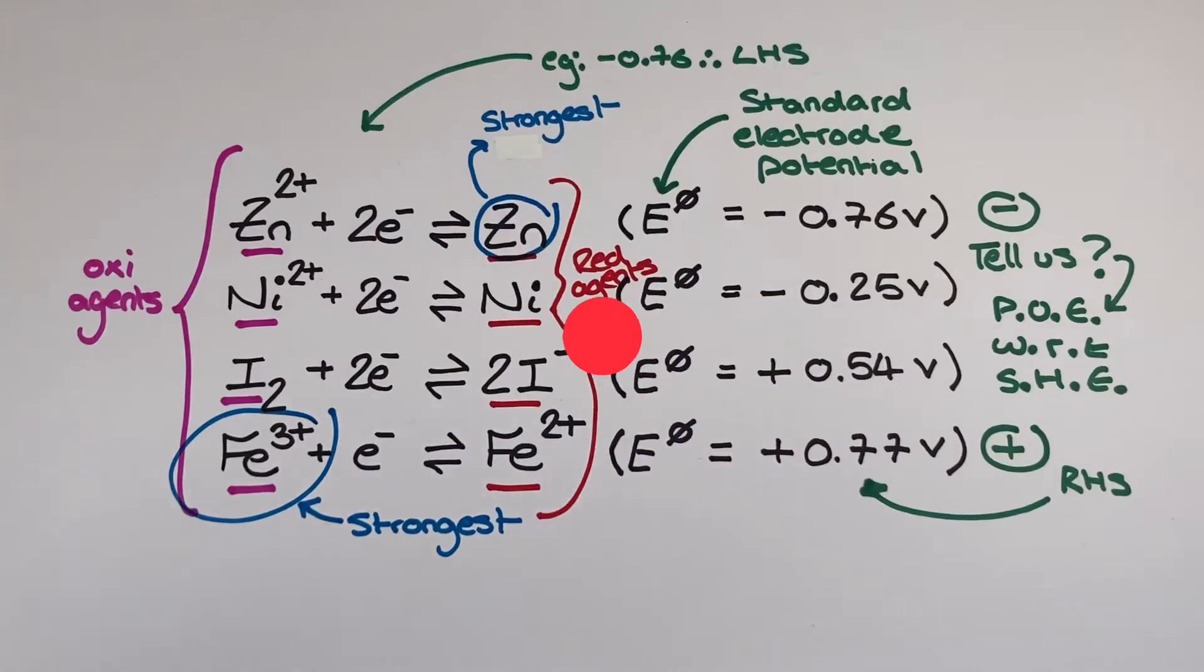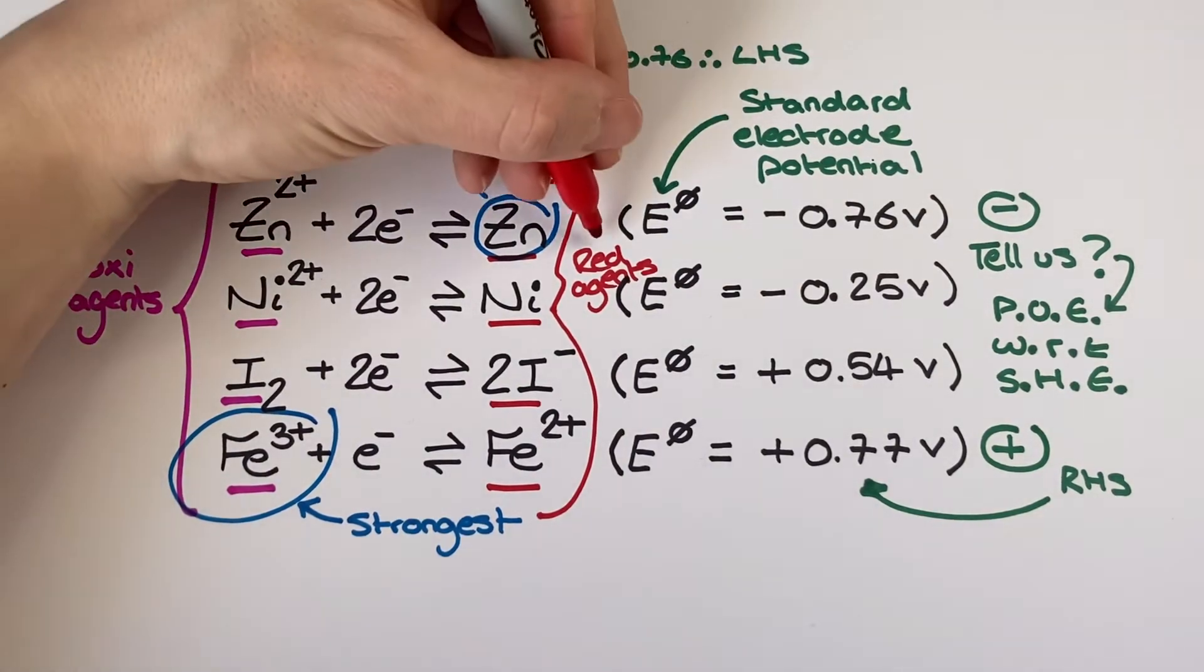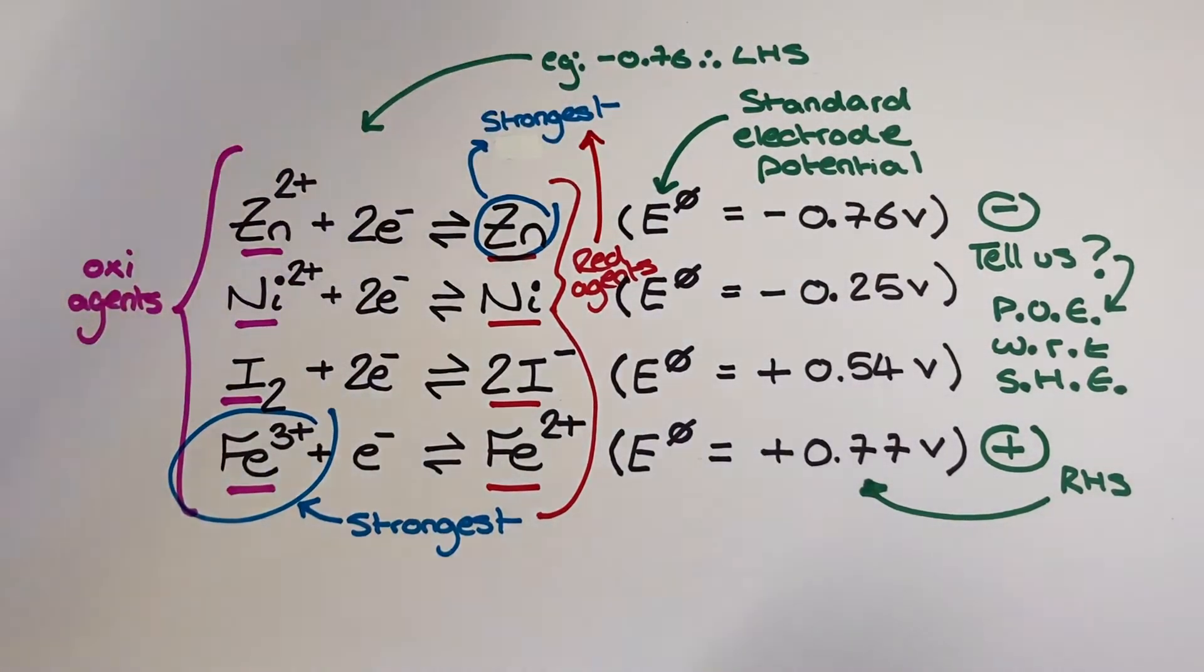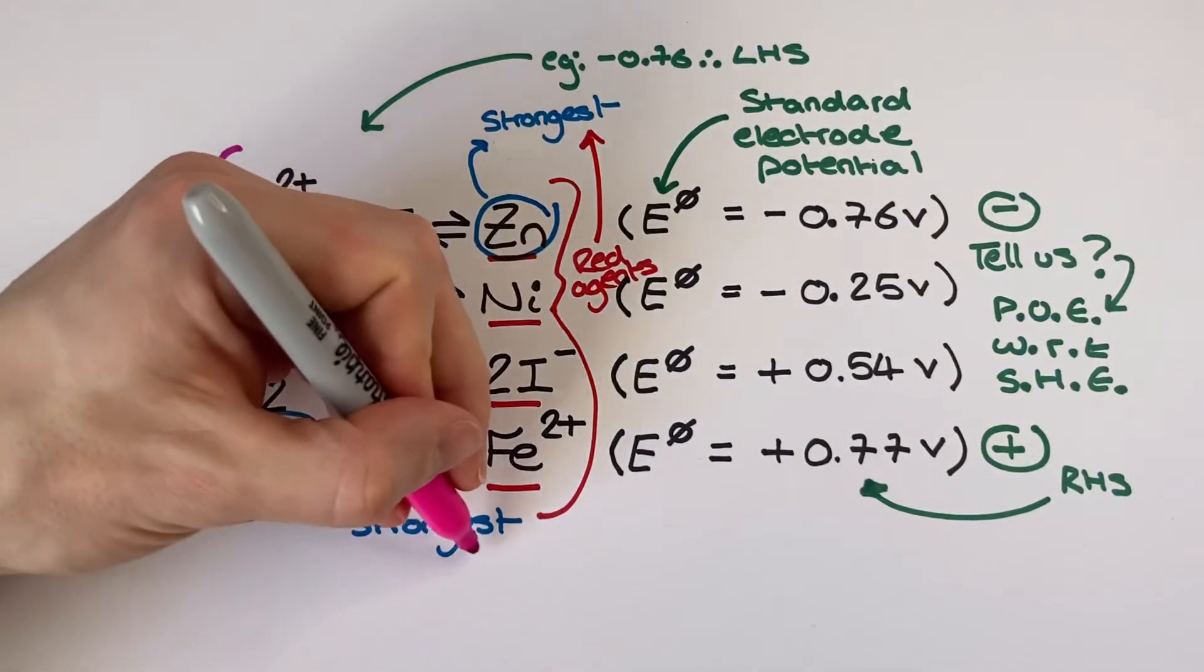So now I know where my oxidising agents are and my reducing agents are, which is my most powerful of each? Well the most powerful reducing agent is zinc and the most powerful oxidising agent is the iron-3-ion.